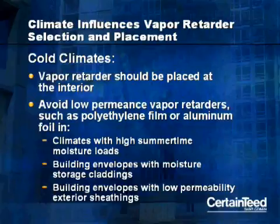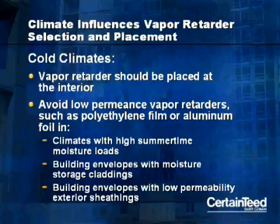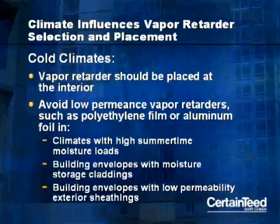We'll look at how climate influences the selection and placement of vapor retarders. First, in cold climates, vapor retarders should be placed at the interior of the building envelope. It's best to avoid low-permeance vapor retarders, such as polyethylene film or aluminum foil, in climates with high summertime moisture loads, in building envelopes with moisture storage claddings such as concrete or brick, and in building envelopes with low-permeability exterior sheathings such as extruded polystyrene.